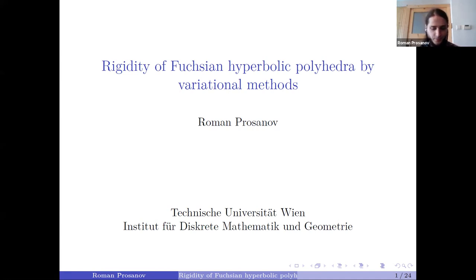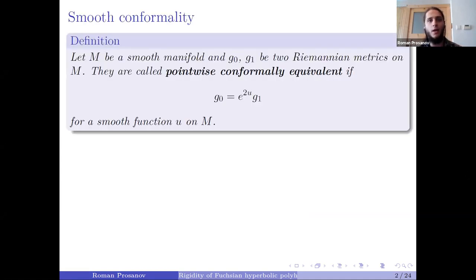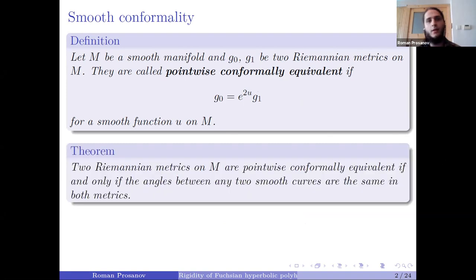I'm going to describe some state of the art around discrete conformality. First, just for the sake of completeness and for those who didn't attend David's talk yesterday, I would like to very quickly recall very basic notions from smooth conformality. On a smooth manifold, two Riemannian metrics are pointwise conformally equivalent if their metric tensors differ by multiplication by a positive smooth function, which is convenient to write in exponential form.